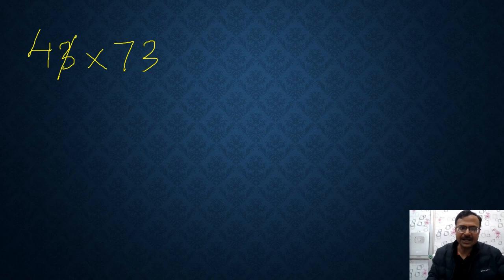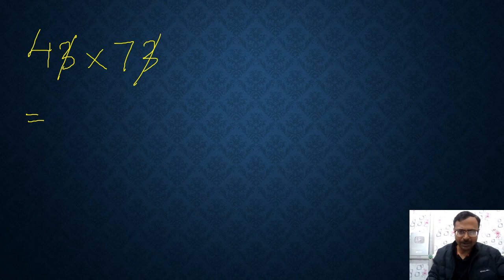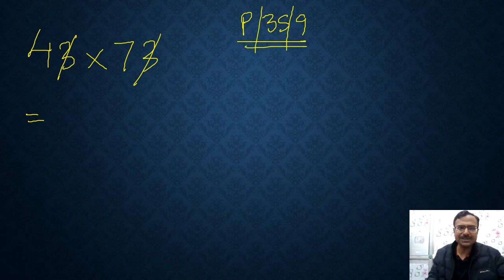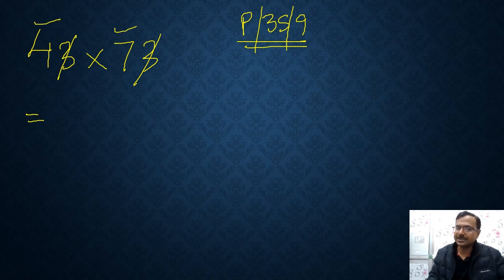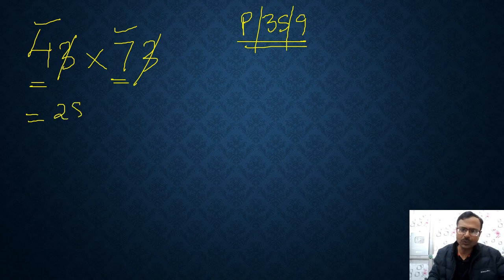Okay friends, so let's see some of the questions. Suppose you have 43 times 73. So just forget this 3. Okay. So if you have to multiply them, we use a technique called P3S9. P3S9. What is this P3S9? P stands for the product of the first two digits. That means 4 and 7 multiplied together. This will give you 28 obviously.